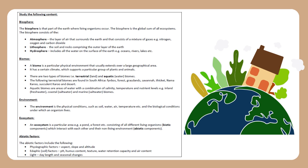Environment: The environment is the physical conditions such as soil, water, air, temperature, etc., and the biological conditions under which an organism lives. Ecosystem: An ecosystem is a particular area — e.g. a pond, a forest, etc. — consisting of all different living organisms (biotic components) which interact with each other and their non-living environment (abiotic components).